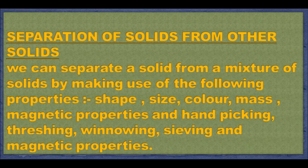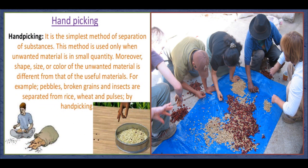Hand picking involves picking out substances by hand and separating them from others. It is used when the components to be separated are large and easily distinguishable, when unwanted materials are present in small quantities, and when the shape, size and colour of unwanted materials differ from the useful ones. For example, small stones, broken grains and husks are separated from rice, wheat and pulses by hand picking.